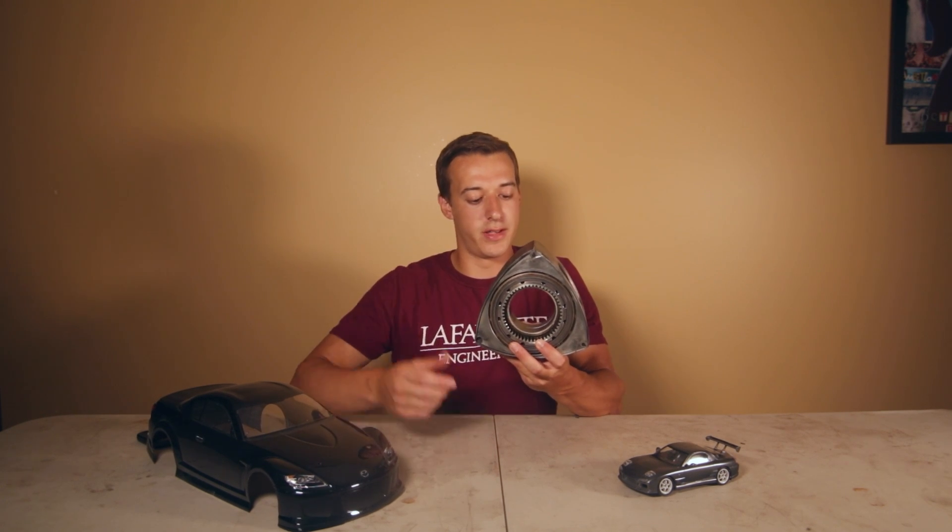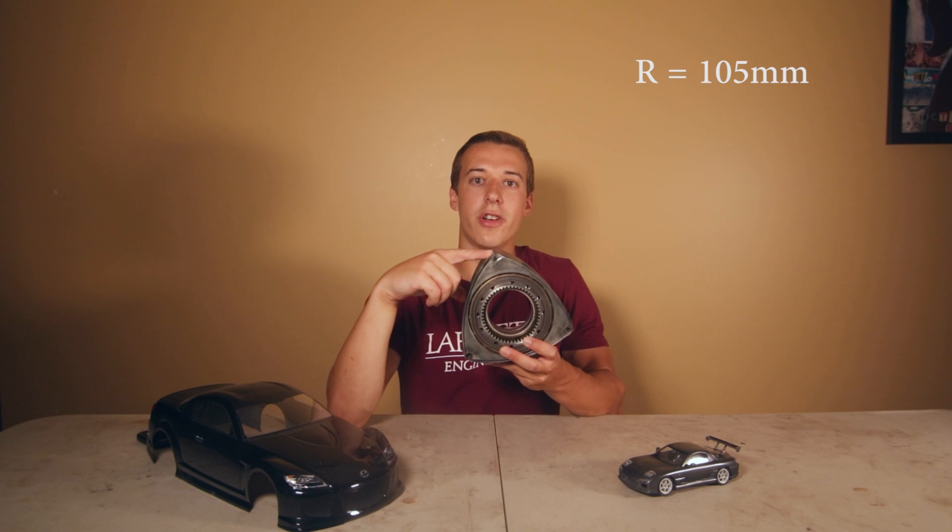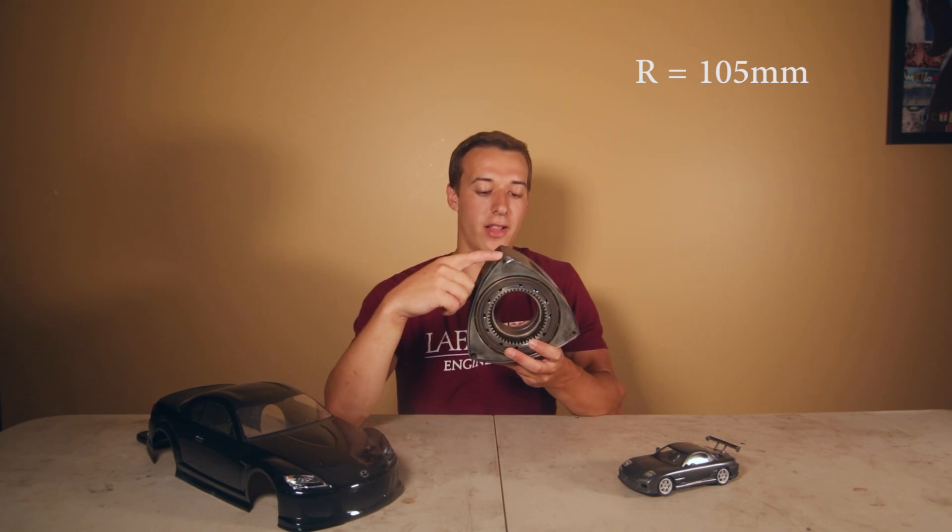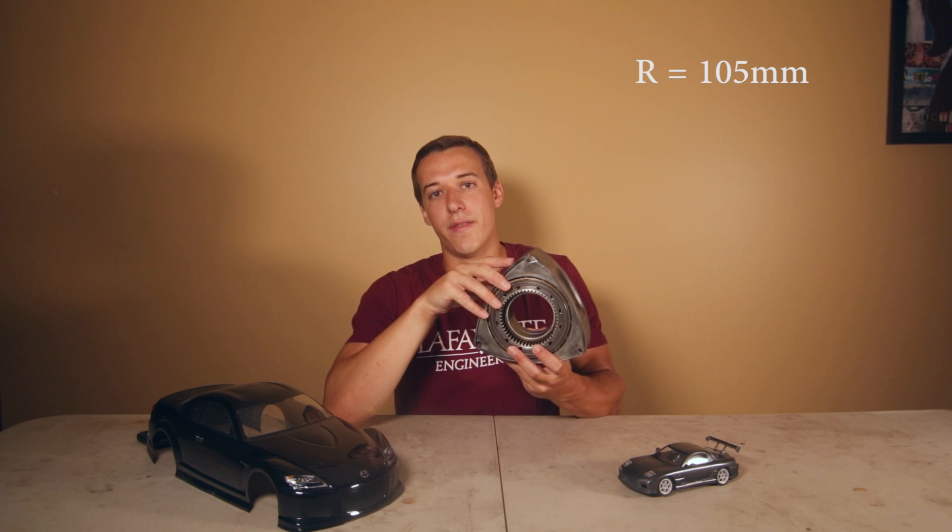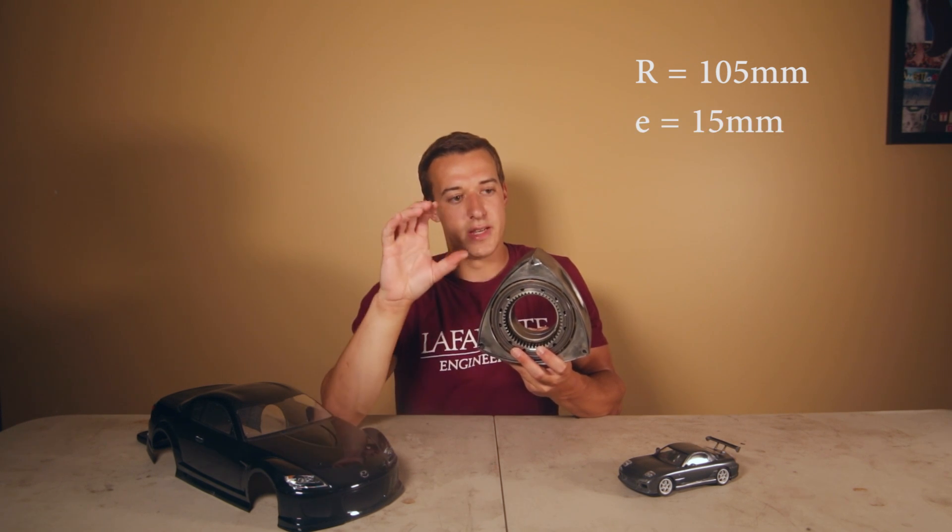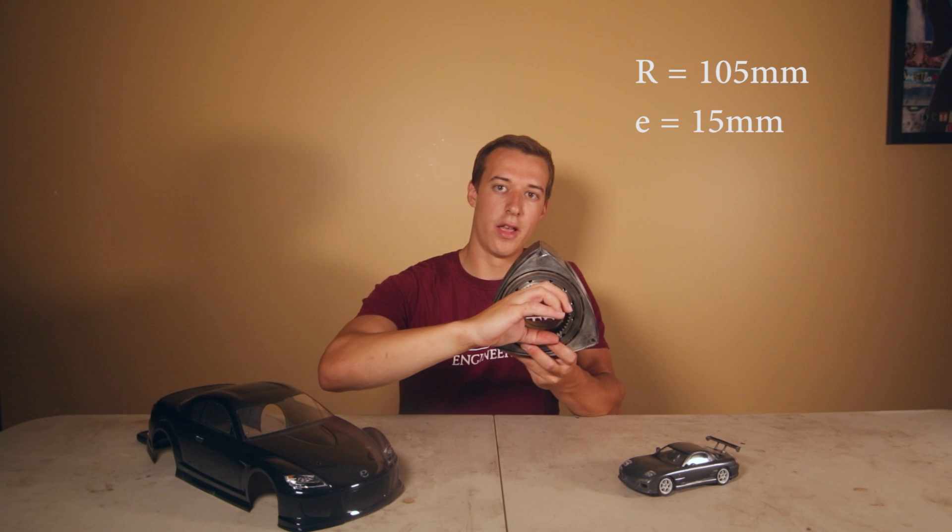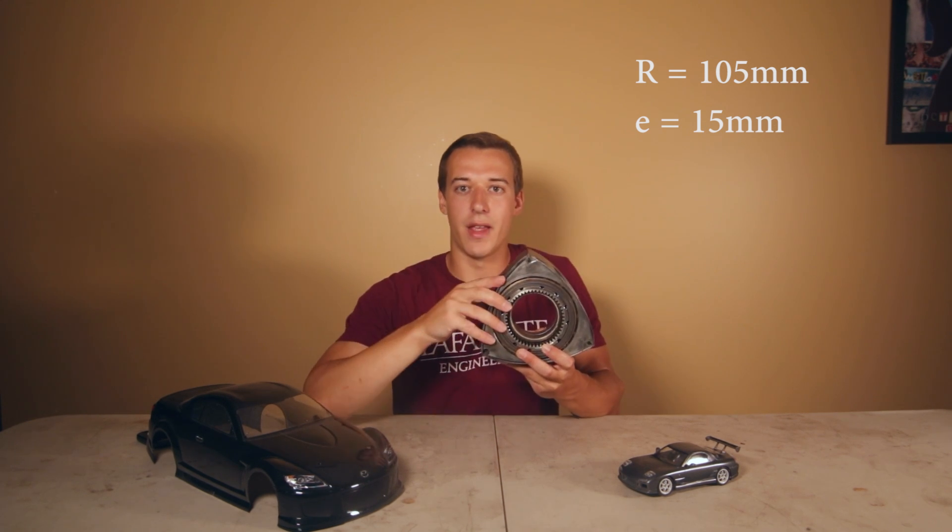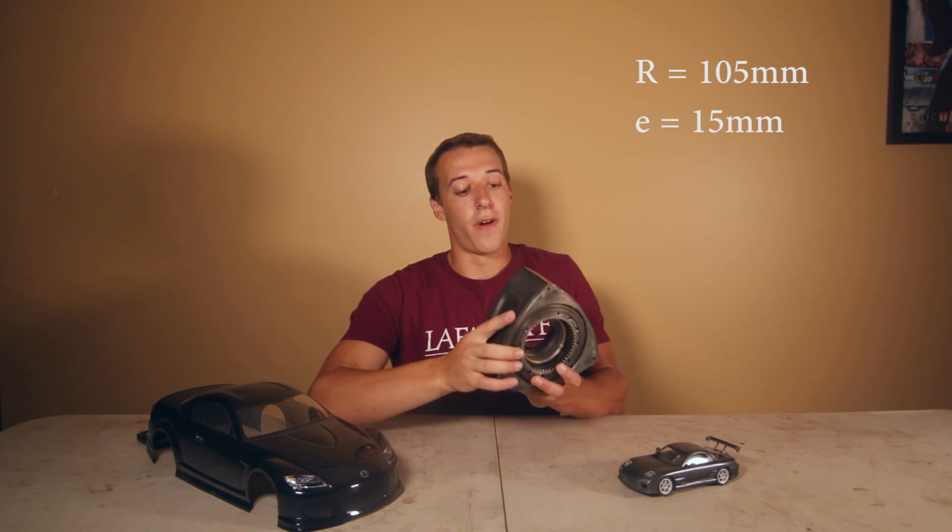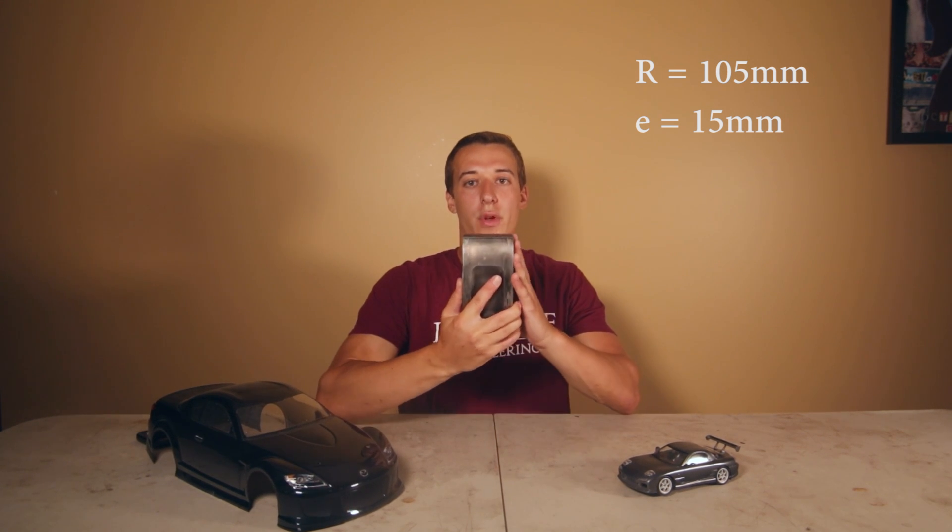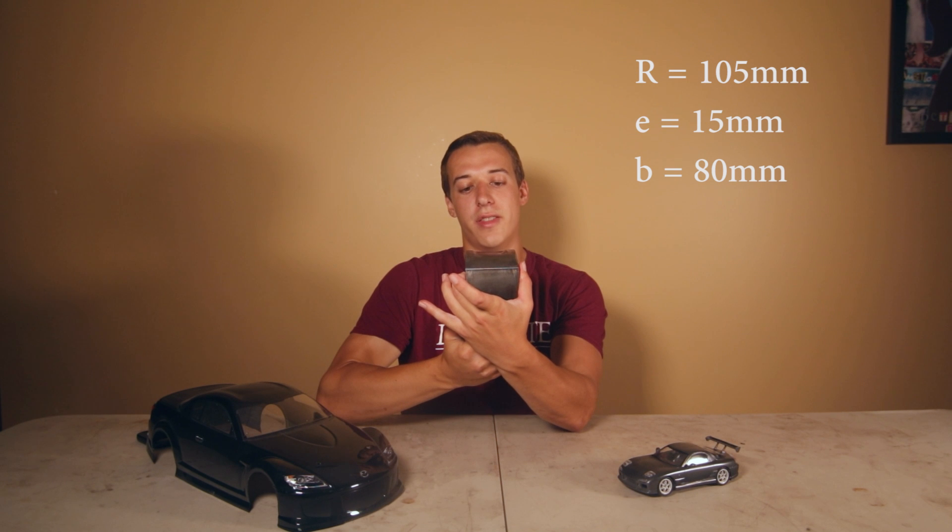The first one is the rotor center to tip distance that is known as r and that is 105 millimeters on these Wankel engines. The second one is eccentricity and that is given E which is the offset between the center of the lobe which goes in this rotor and the center of the crankshaft and that offset distance is 15 millimeters on a Wankel engine. The final one is the width of the rotor housing and that's given as B and that is 80 millimeters on these engines.